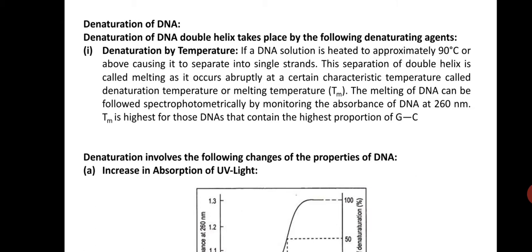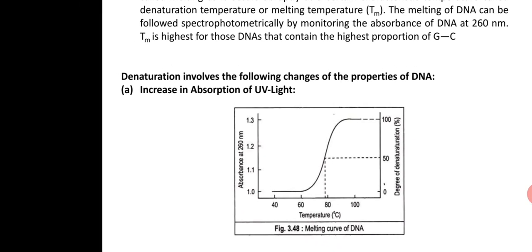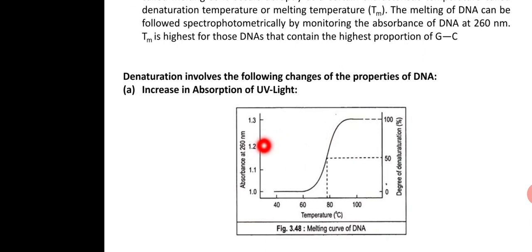G is triple-bonded with C. When GC content is more in DNA — somewhere around 60 percent — and AT concentration is less, the first thing you will observe is denaturation. When denaturation starts happening, you can see that at 50 percent denaturation, we call that temperature TM.